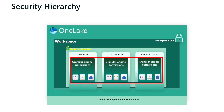These engines enable object level permissions by sharing individual tables and views with specific users through SQL endpoint or semantic models, rather than sharing the entire compute engine. SQL endpoint offers direct SQL access to one lake tables, allowing for more granular permissions such as table level, row level, column level, or dynamic data masking security within data warehouse and the SQL endpoint of the lake house.